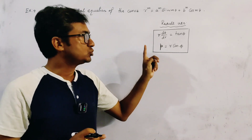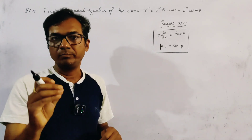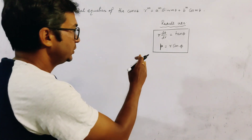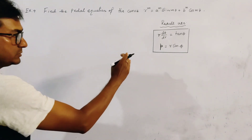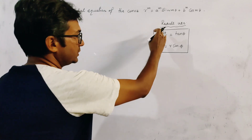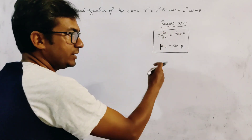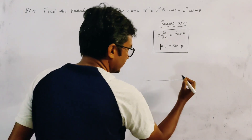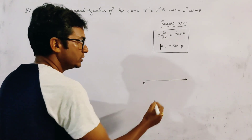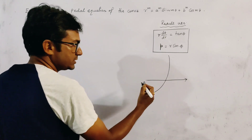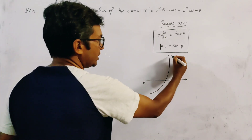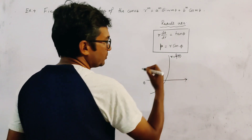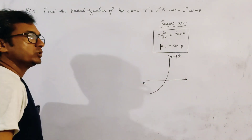If you want to see the proof of these two relations, search the description box of this video. And roughly, I will explain all the symbols with a rough sketch. In a polar curve, let O be the pole, and let this be the curve r equal to f(θ), a polar curve which is r(θ).